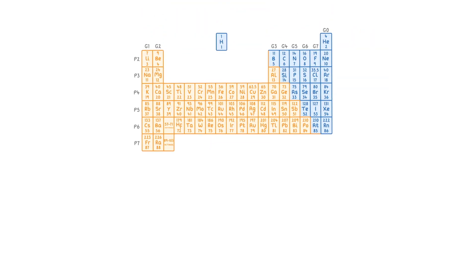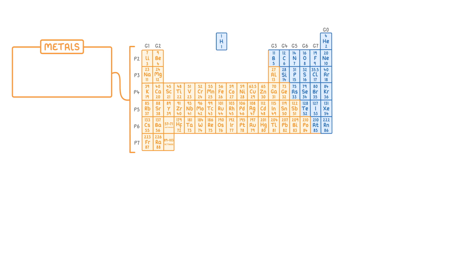As you can see from the periodic table, most elements are metals, and we find them towards the bottom left of the table. One of the key features of metals is that they form positive ions when they react, like a calcium 2+ ion.